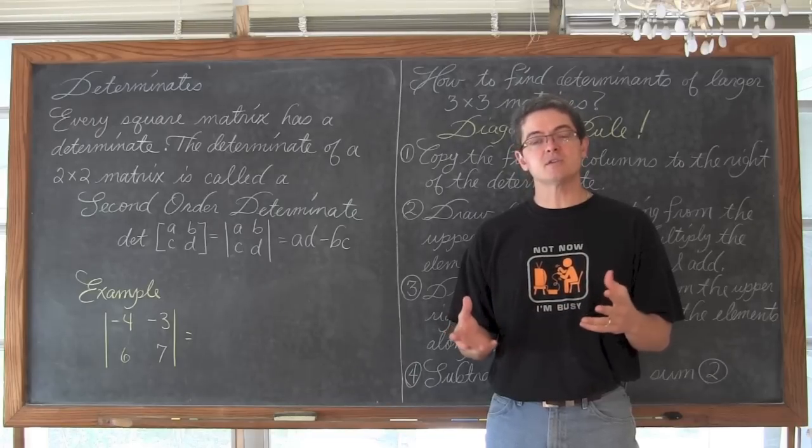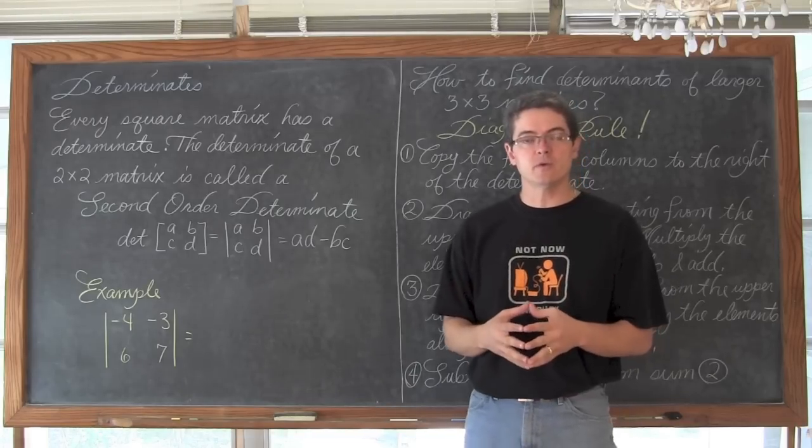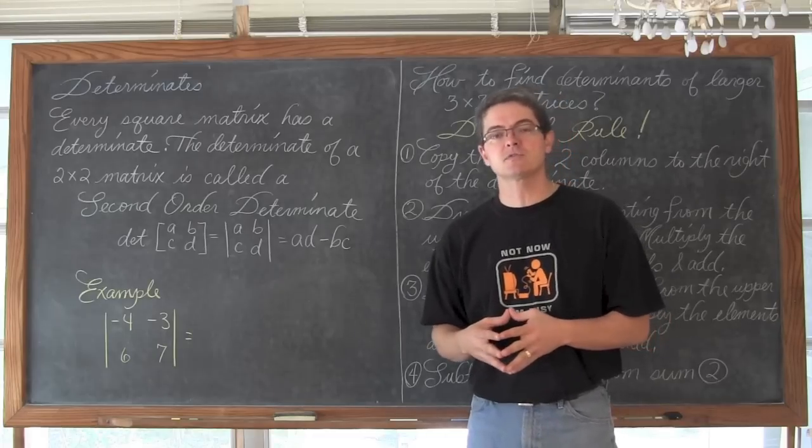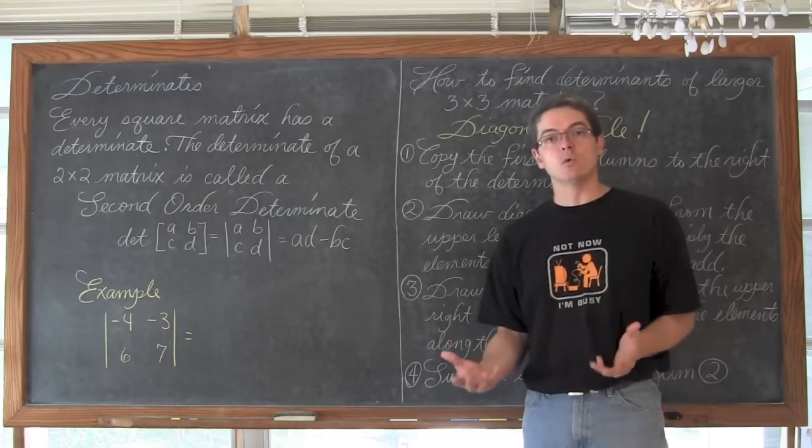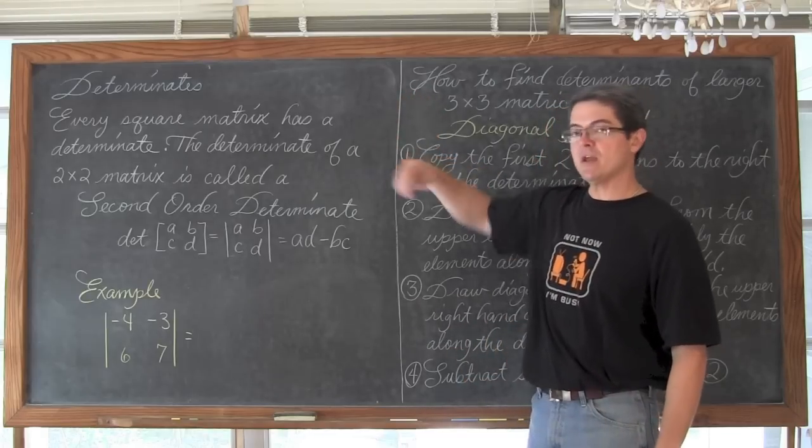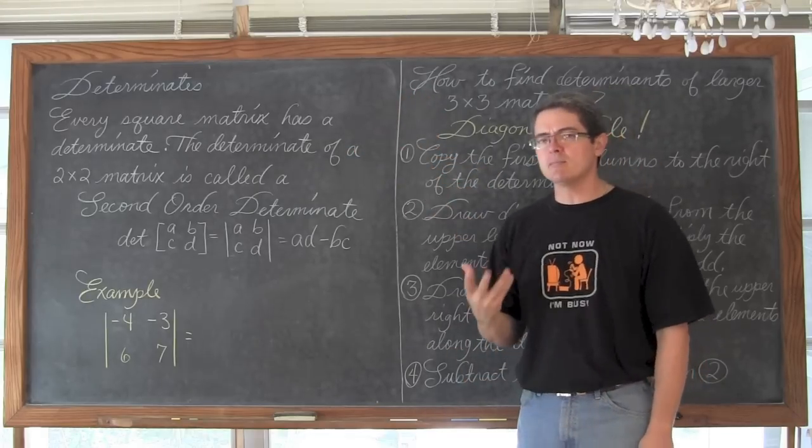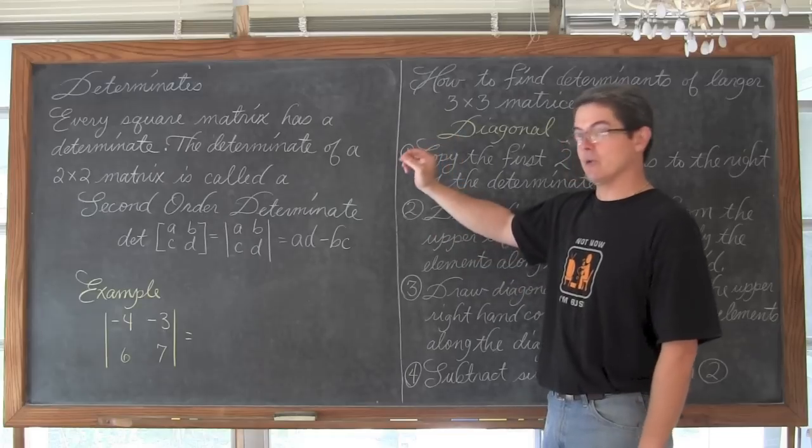Which has basically just been the Gaussian elimination method which we know is a long and tedious process for solving systems of equations whether they are written as equations or an augmented matrix. So a determinant. Every square matrix has a number related to it and is called a determinant.